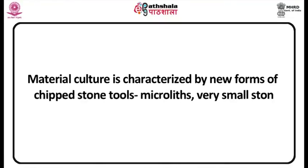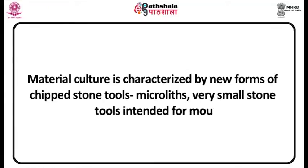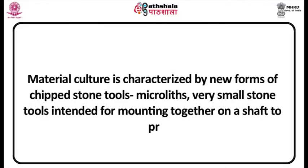Mesolithic material culture is characterized by greater innovation and diversity than found in the Paleolithic. Among the new forms of chipped stone tools were microliths — very small stone tools intended for mounting together on a shaft to produce a serrated edge. In Northwestern Europe, the Mesolithic began about 8000 BC after the end of the Pleistocene epoch and lasted until about 2700 BC.